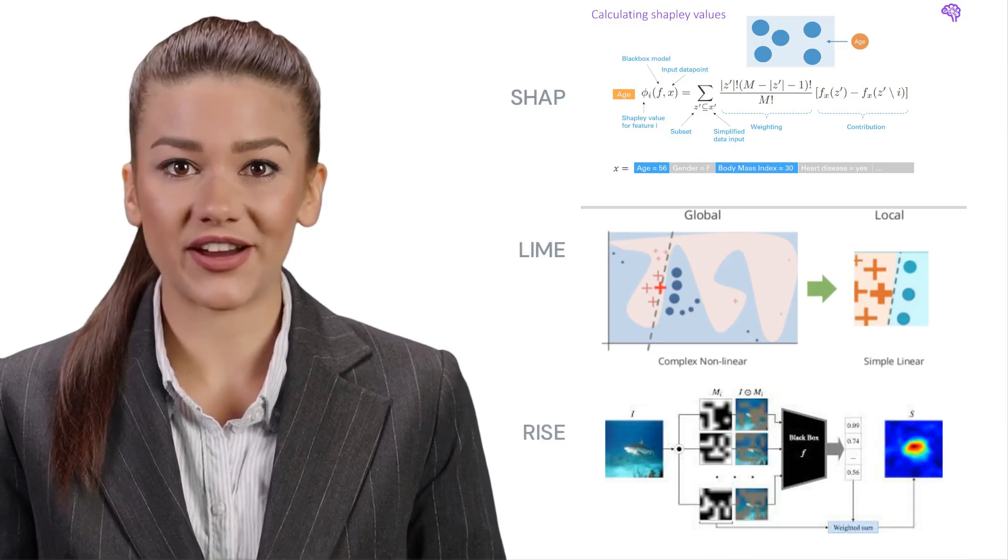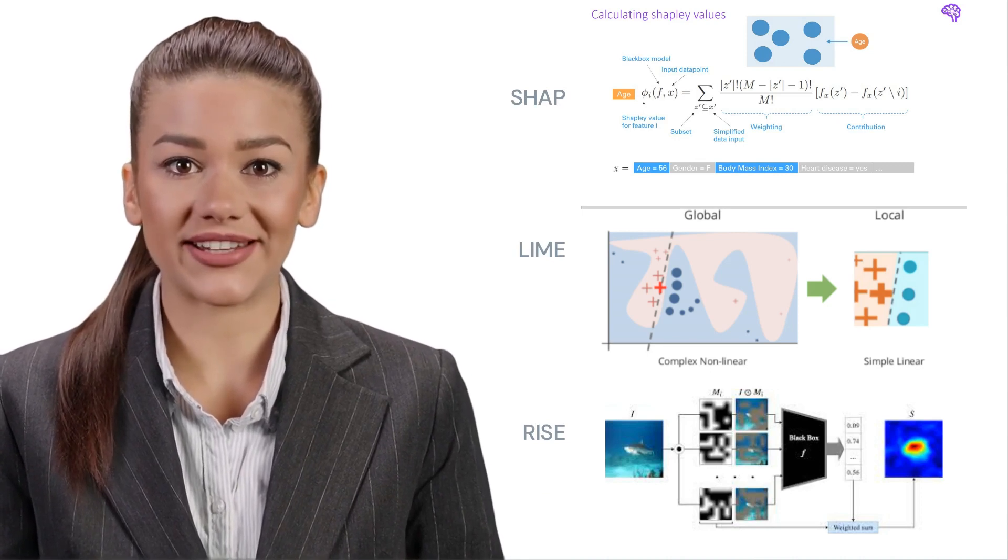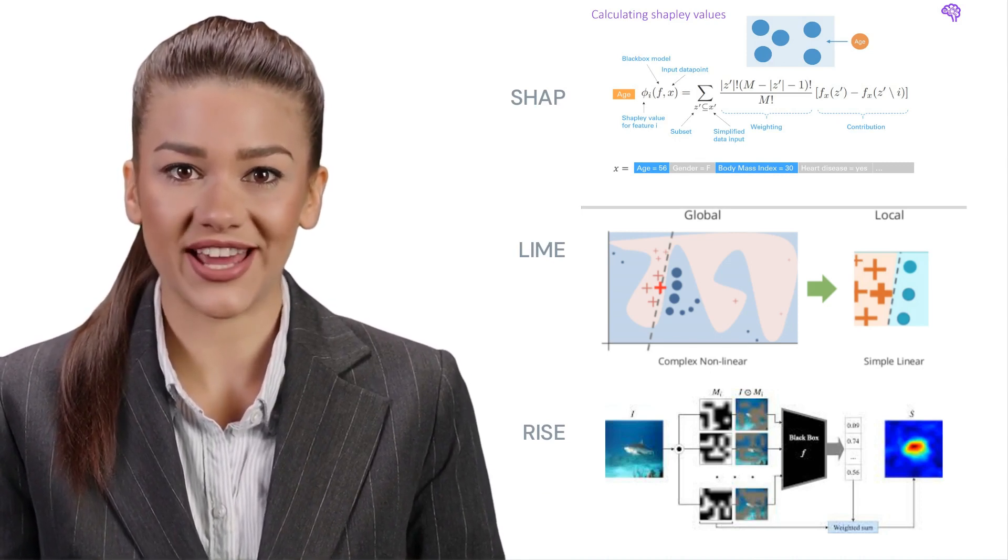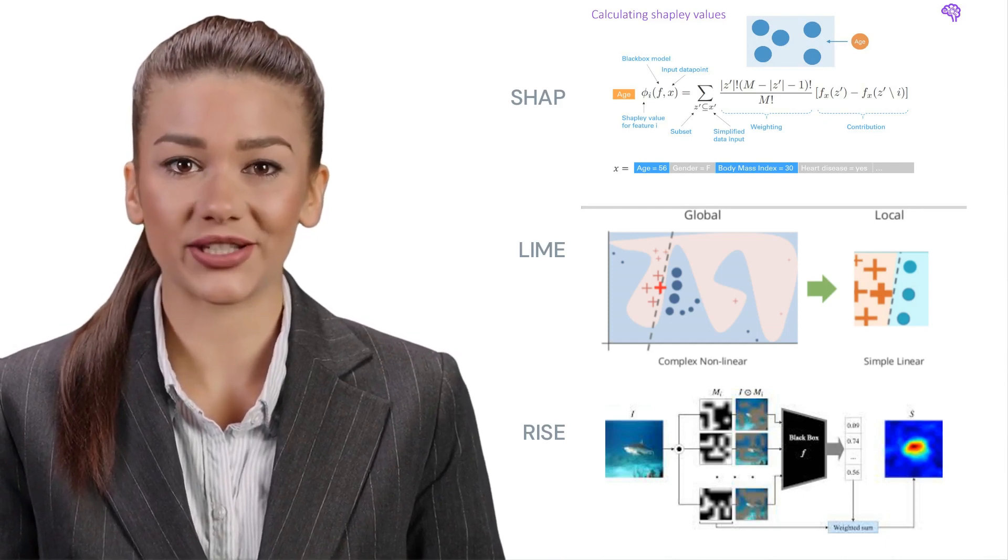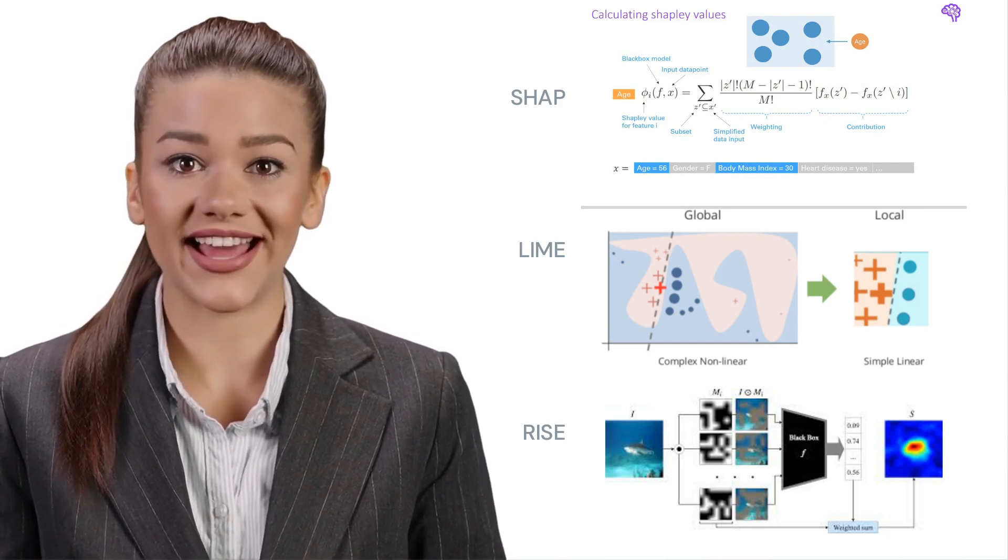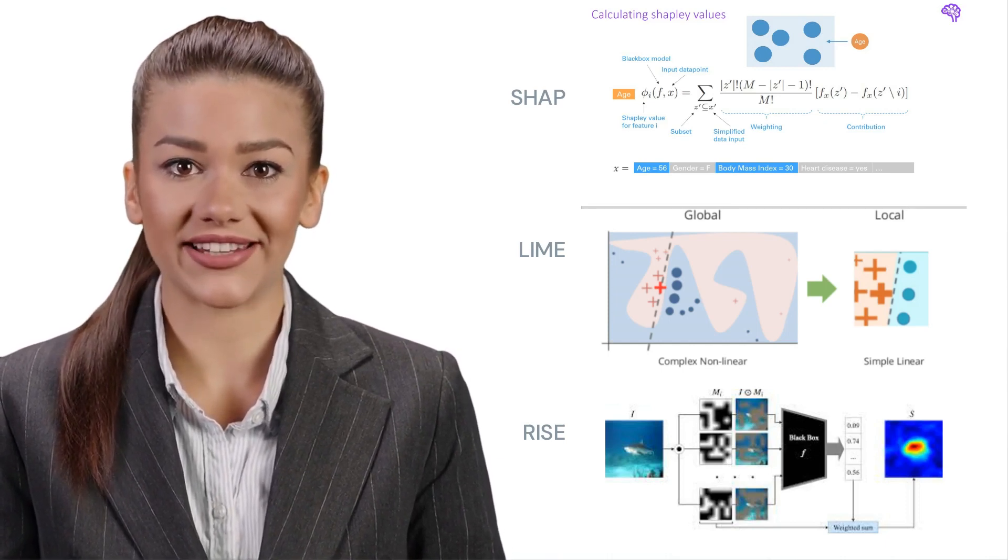In order to achieve this type of high performing yet explainable model, three different models were implemented: an extreme gradient boost classifier, a light gradient boost classifier, and a support vector classifier. A high accuracy was obtained with all three, meaning that the explainable portion was ready to be added.